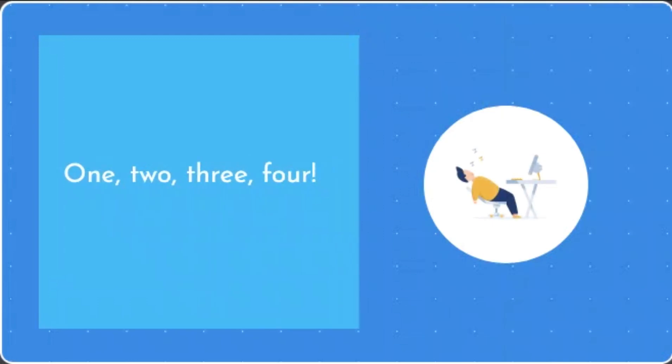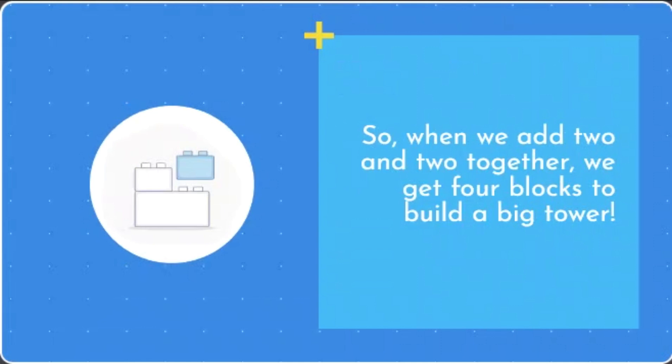1, 2, 3, 4. So, when we add 2 and 2 together, we get 4 blocks to build a big tower.